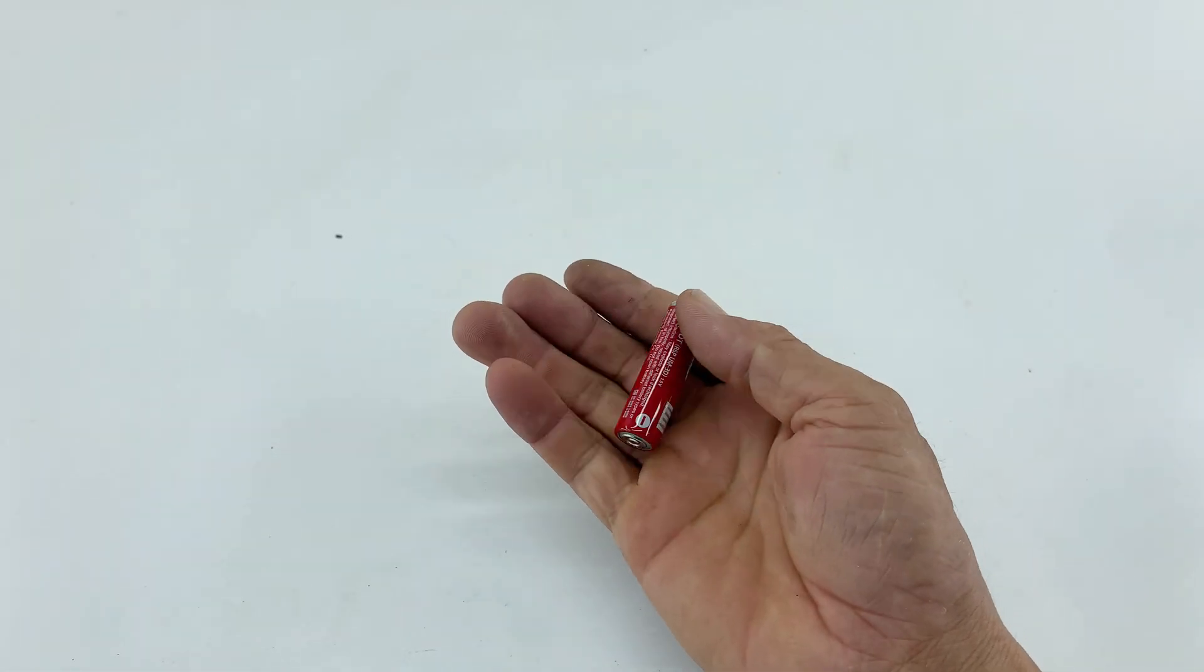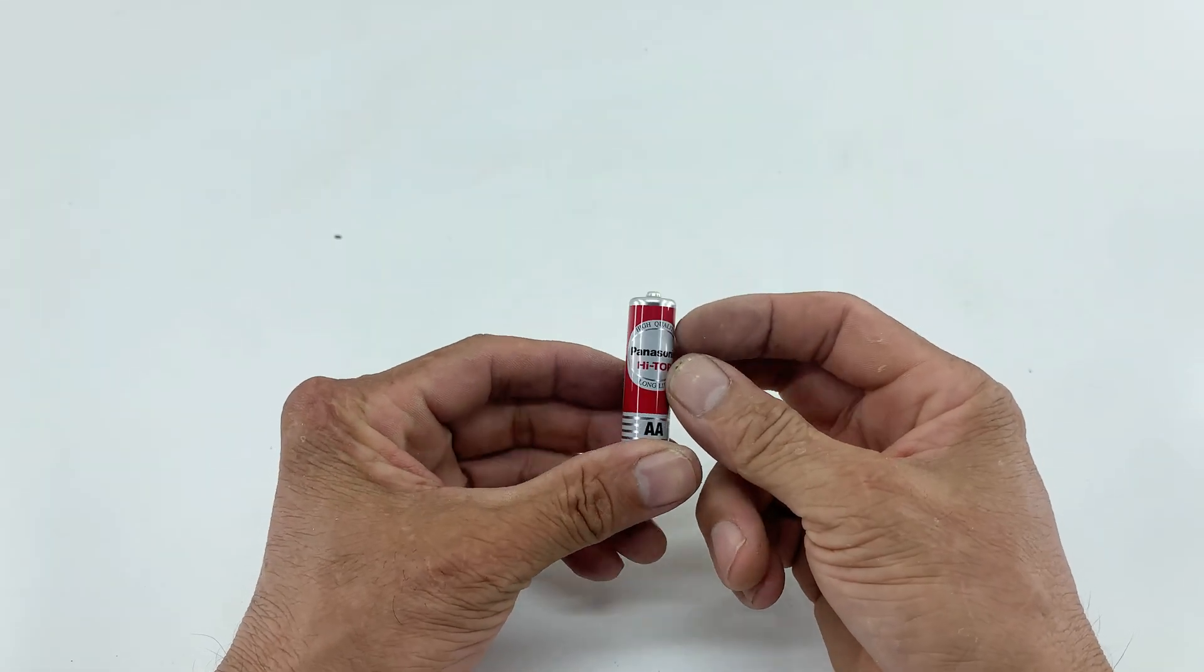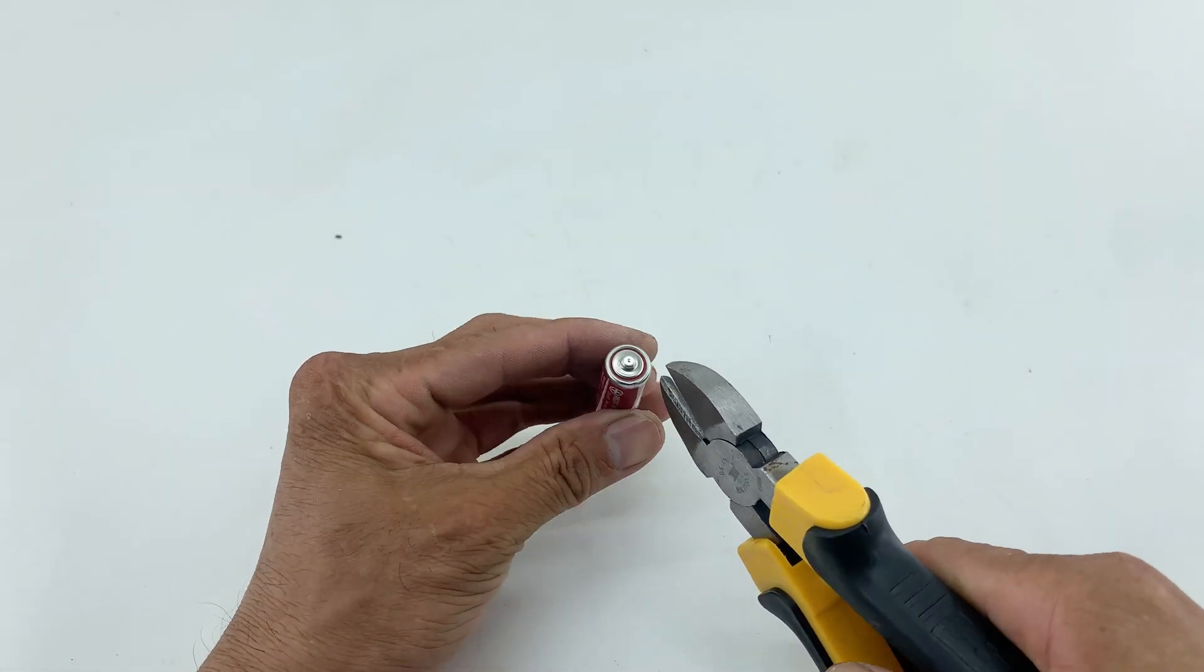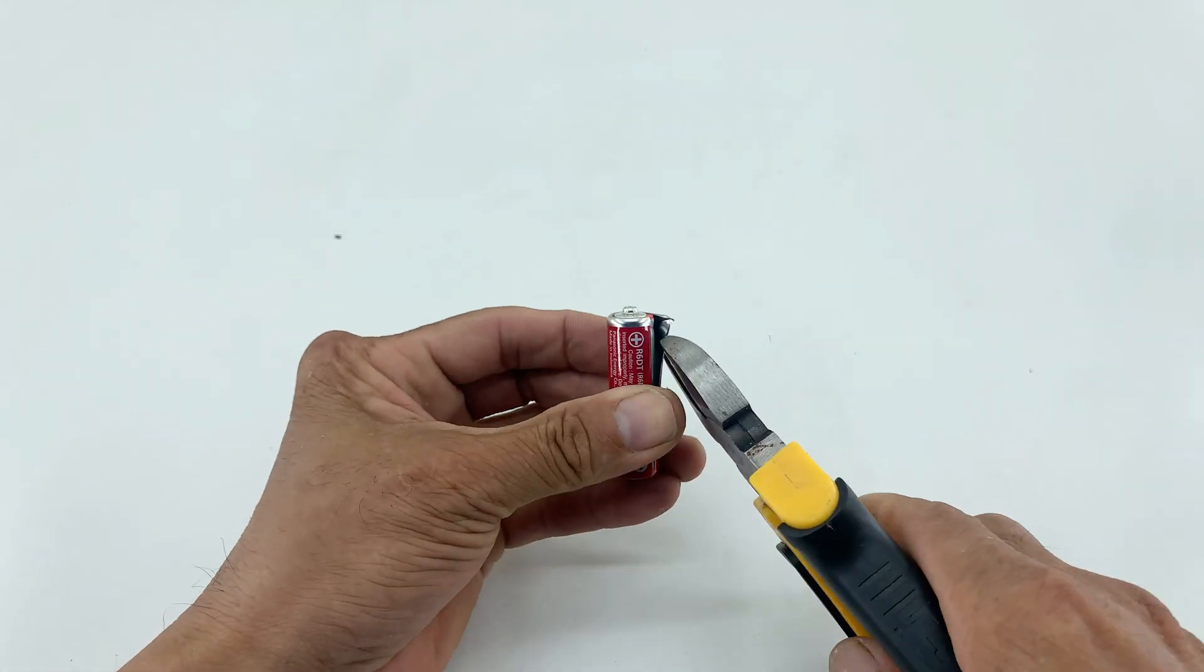Next, I am preparing our soldering tip. I take an old AA battery and carefully cut away its outer casing using pliers. The goal here is to extract the carbon rod from the center.